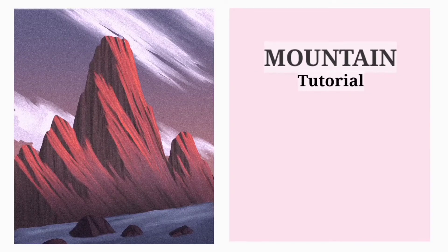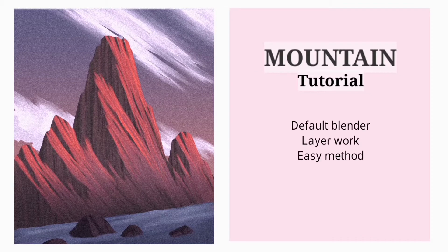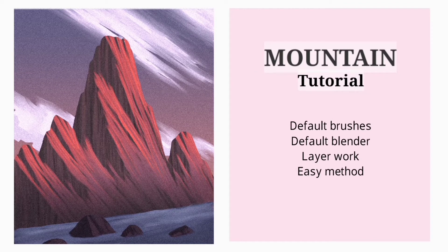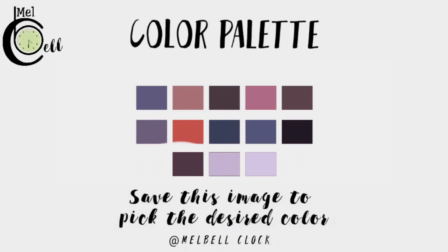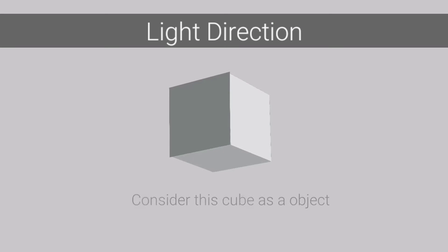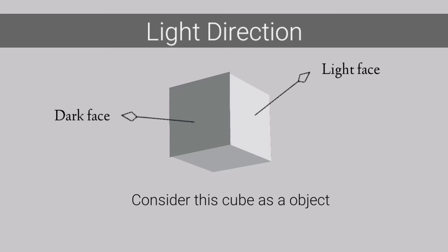Watch this step-by-step mountain tutorial with complete guide and default brushes. This is the locked layer, this is the clipped layer, and this is the selected layer. Save this image. Pick the desired color. Consider this cube as an object and let's see the light direction — this cube would have one light face and the other would have a dark face.